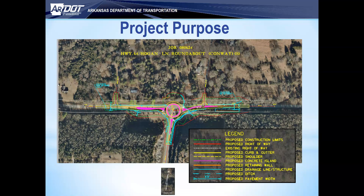This project will begin just after Boone Loop Road, with the roundabout at Hogan Lane, and end after the easternmost Boone Loop Road. This project will not require a detour; however, short-term flagging may be implemented. Access will be provided throughout construction.